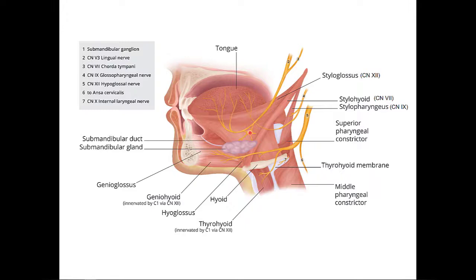The parasympathetics from the submandibular ganglion are then distributed to the submandibular gland and the sublingual glands.